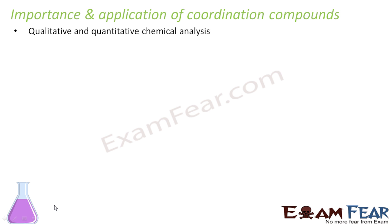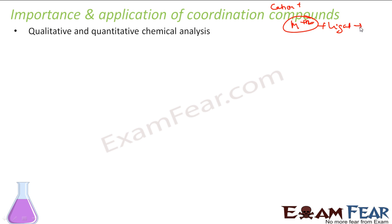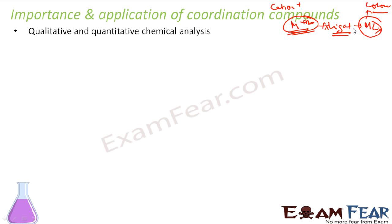This is a very effective implementation of coordination compounds to detect cations. If a cation has a positive charge, you react it with ligands, and this forms some complex. These complexes have a characteristic color, because coordination compounds have peculiar different colors. So if you want to detect the presence of some metal cation, you react with some ligands, get a color, and based on that color you can identify what the cation was.